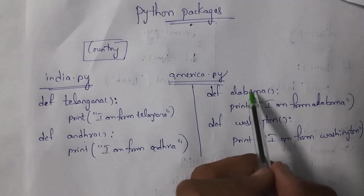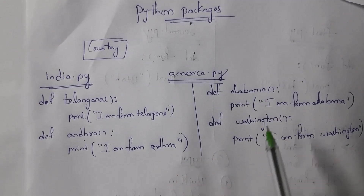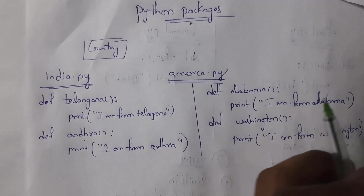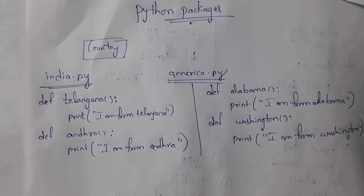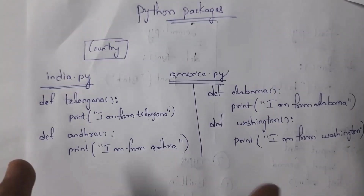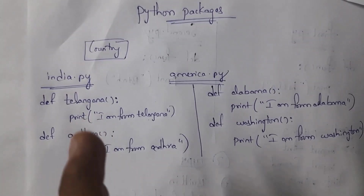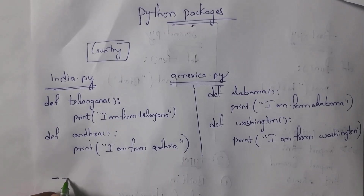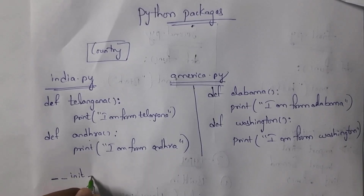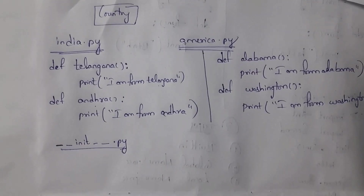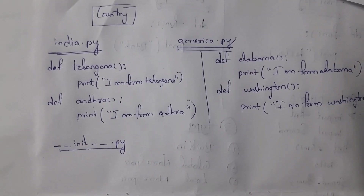Next I created another module, america.py. Similarly, america.py contains two functions: 'alabama' and 'washington'. The alabama function contains the statement 'I am from Alabama', and the washington function contains the statement 'I am from Washington'. These are two modules. We also need to create another module: __init__.py.